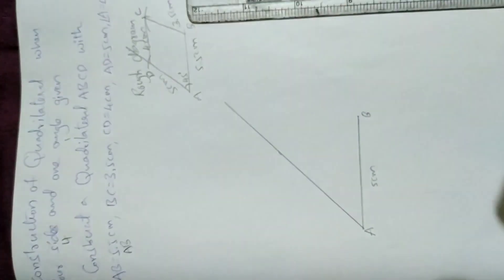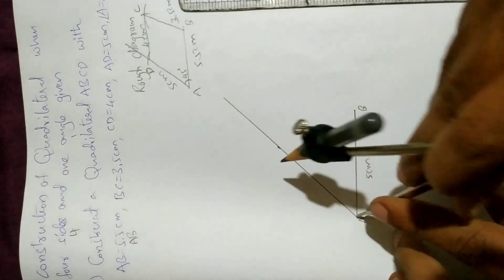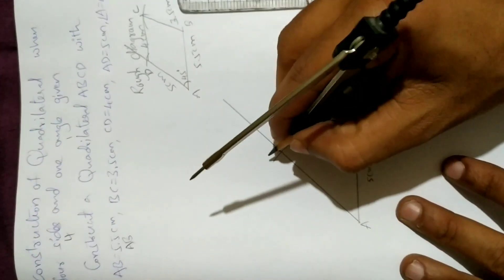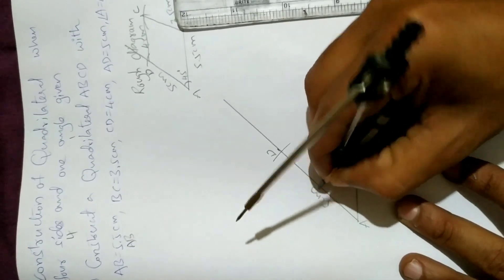Right. So 5 centimeters from point A, cut the angle. So this is point D and this is 5 centimeters. Finished.